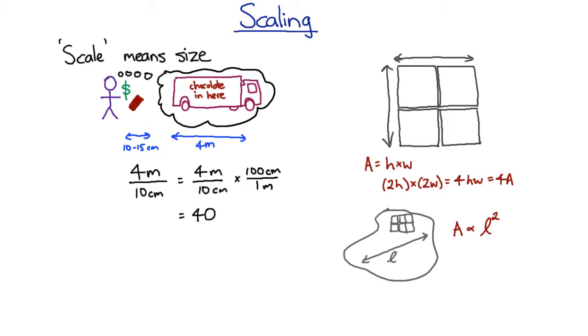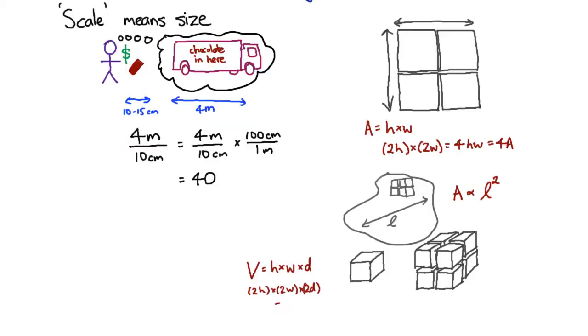Now you don't buy chocolate by the area, by the square meter, or square centimeter, or something like that. You buy chocolate by the kilogram, or by the gram. And the mass of something is proportional to its volume. So it doesn't just matter how wide and how long the chocolate bar is, it also matters how thick it is. Now if I take a cube and double its length, width, and height, you can see that I have eight times as many cubes. And that's not surprising algebraically, we can see that if we have a volume, and it's a height times a width times a depth, and if we double all of those, then we're going to end up with eight times the height times the width times the depth, which is eight times the volume.